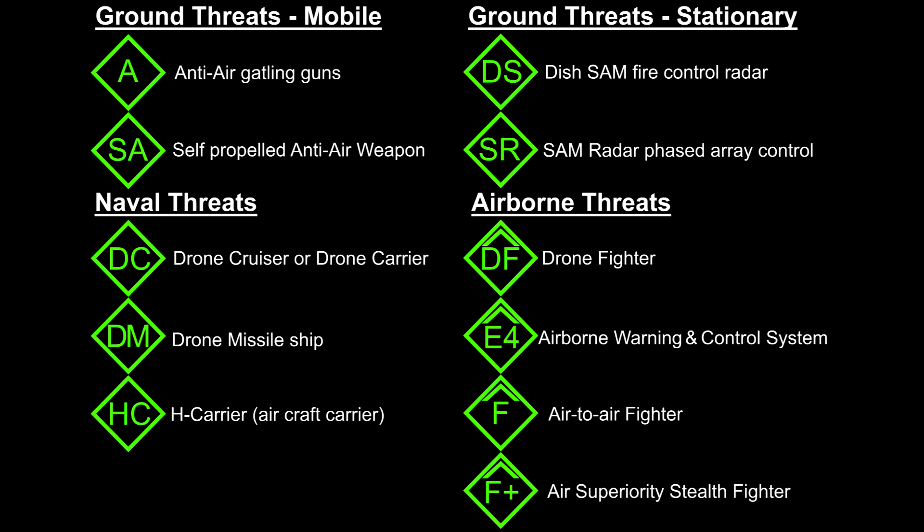There are several different hostile units that can be detected and identified via the RWR, each with their own symbol. I will leave this up on the screen for a moment — feel free to pause the video to study these symbols. However, there is also a link in the description to the image file that was used and a link to the wiki page that will be updated with any new icons added to VTOL VR.